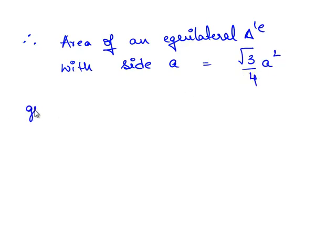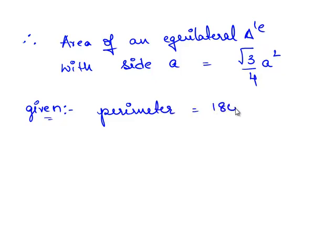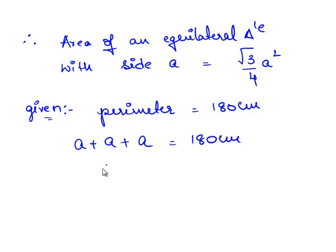In the given problem, the perimeter is equal to 180 centimeters. The perimeter of an equilateral triangle with side A is the sum of the three sides, that is A plus A plus A, which is equal to 180 centimeters. Therefore, 3A is equal to 180 centimeters, and A is equal to 180 divided by 3, that is equal to 60 centimeters.